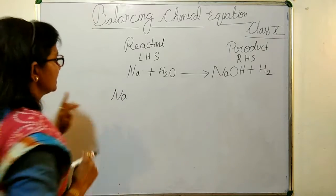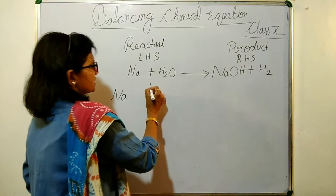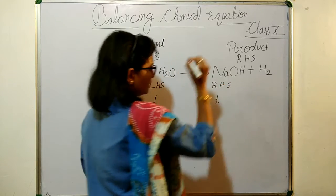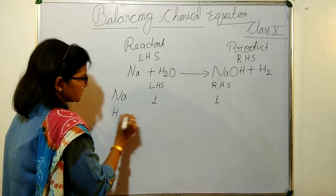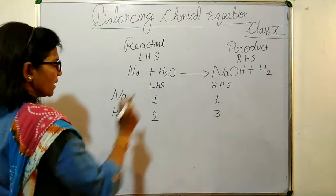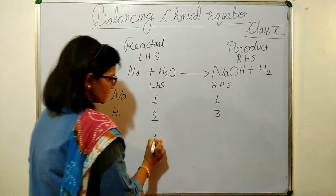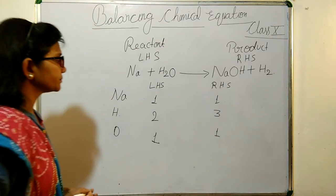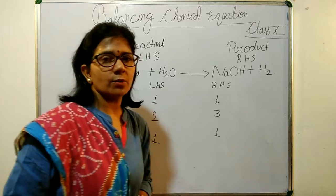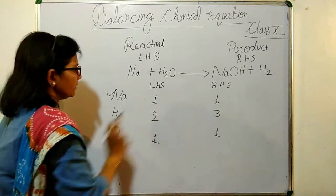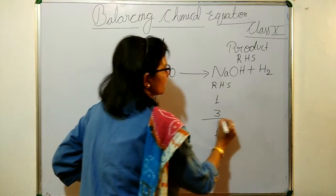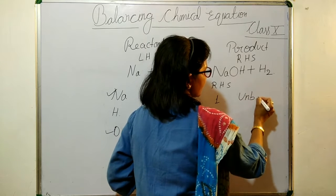The number of sodium atoms on the LHS is 1, and on the RHS it is also 1. The number of hydrogen atoms on the LHS is 2, and on the RHS it is 1 plus 2, so it is 3. Oxygen is 1 on both sides. But in the case of hydrogen it is 2 on the LHS and 3 on the RHS, so we can say that this reaction is unbalanced.